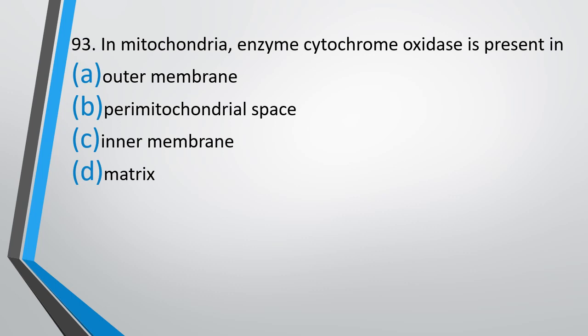Question number 93. In mitochondria, the enzyme cytochrome oxidase is present in: (A) outer membrane, (B) perimtochondrial space, (C) inner membrane, (D) matrix. The correct answer is option C, in the inner membrane.